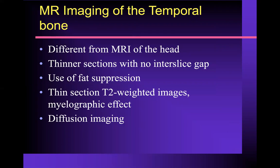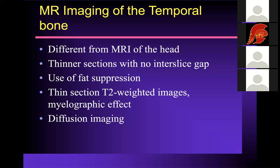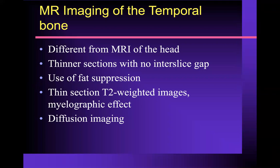For MRI imaging of the temporal bone, it's different from MRI of the brain. To image the temporal bone, you have to do thinner slices. A brain MRI typically uses five-millimeter slices with a two-millimeter inter-slice gap, so effectively seven millimeters in thickness. While for the temporal bone, we typically scan at three millimeters or less — normally T1 and T2 weighted images at three millimeters with zero gap. You should not use fat suppression on your pre-contrast T1 weighted images; you can use the fat-soft tissue interface to see lesions better. However, post-contrast images should be done with fat suppression.